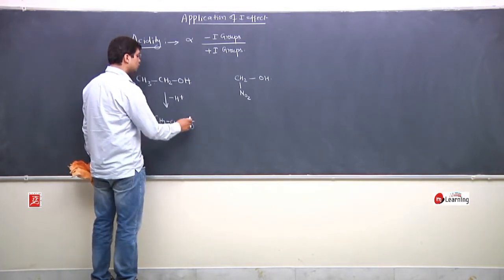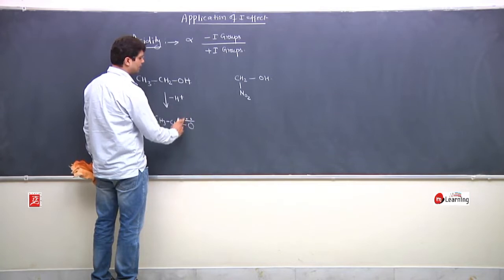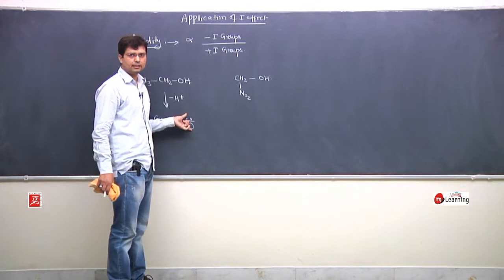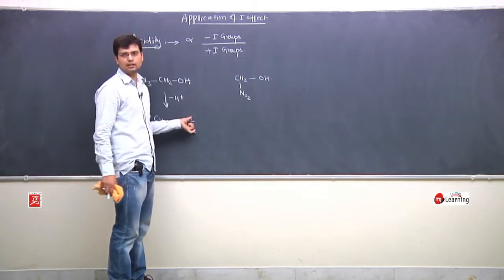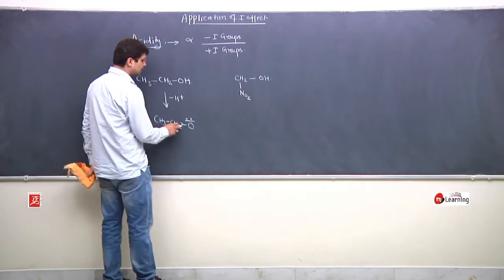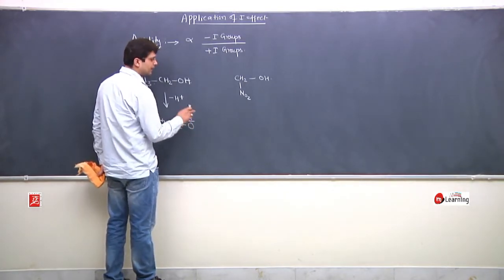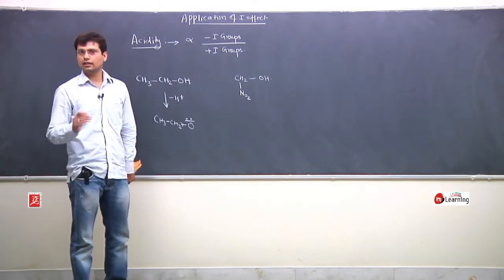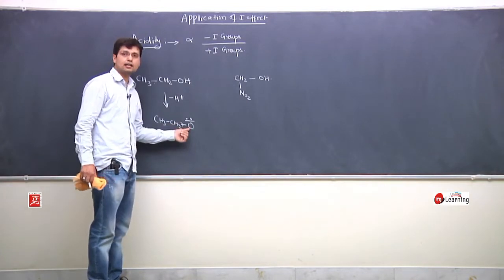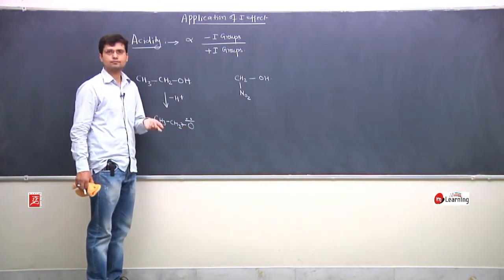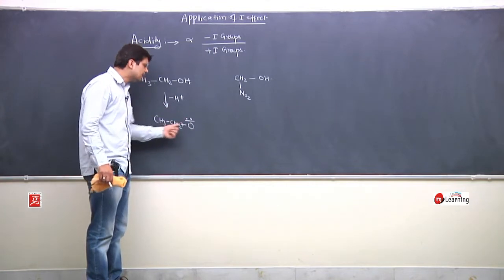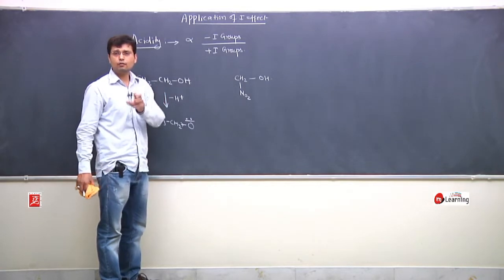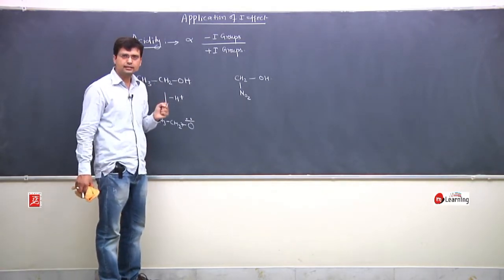Now observe the stability of this formed conjugate base. Here there is a plus-I effect from the CH3CH2 group. If electron density is transferred onto the oxygen, the negative charge will increase on O-negative. If the negative charge increases, the stability will decrease.